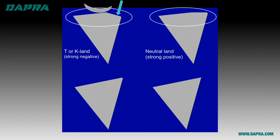The second edge prep is similar, except that the land is neutral rather than negative. This strengthens the cutting edge, but to a somewhat lesser extent than the negative T-Land. The neutral edge is usually a net positive edge when located in a cutter body, so while it has some good strength characteristics, it also can be suitable for a wider variety of materials.